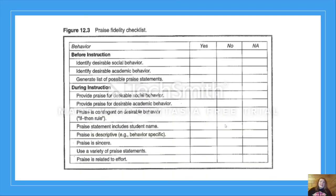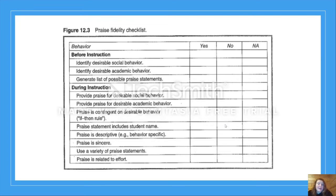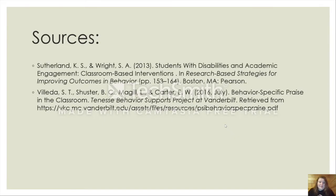This is a praise fidelity checklist from the Sutherland article uploaded in the weekly folder that most of this presentation is based on. Before instruction, you identify the behaviors you want to see and generate a list of possible praise statements. During instruction, you make sure you're actually providing praise when it's needed, following all the rules: if-then, include the student's name, be behavior-specific, use variety, and make sure it's related to effort. You can use this checklist when reviewing your video session to check if you did all those things.